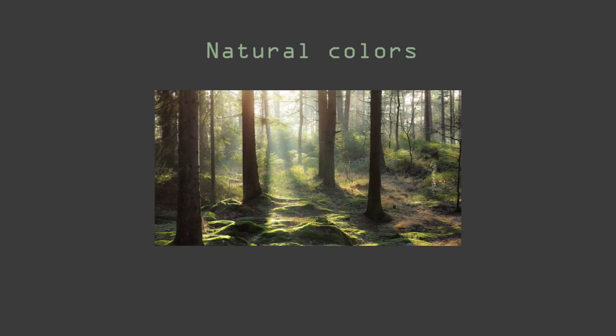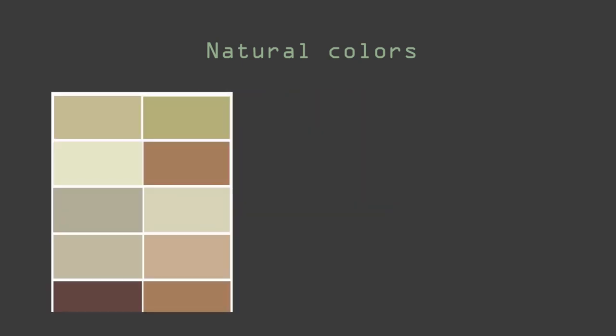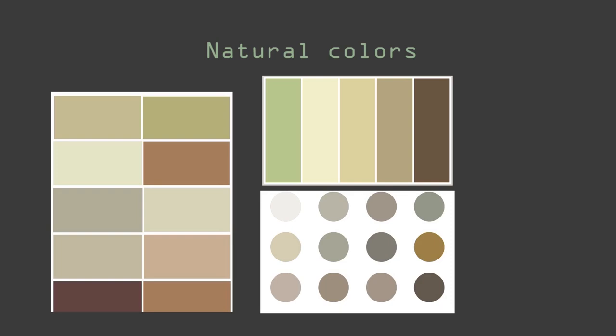Let's start with the first point: natural colors. I think it's pretty obvious which color palettes we're talking about — it's everything you see outside in nature. The most common colors are brown, yellow, green, and grayish. Nature has a lot more colors, but when you're going with earthy tones and knowing that creatures are mostly in grasslands, trees, or on the ground, these colors are the easiest to remember.